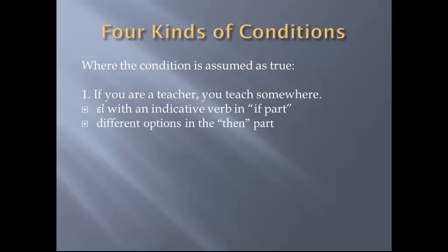Now, it could be wrong — it could be stated factually and be false. 'Ken is a genius' — that's stated factually. Is it true, though? So the if-part, when you're doing a first class condition, is going to be 'ei' with an indicative verb. There are different options for the then-part: 'if you are a teacher, you teach somewhere'; 'if you are a teacher, go teach someone'; 'if you are the Son of God, throw yourself down from this pinnacle.' That's an 'ei' with an indicative verb — it assumes that something is true.